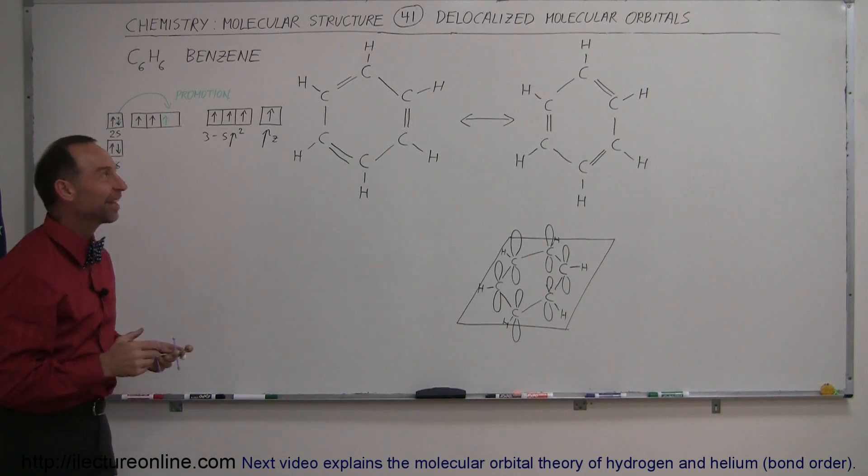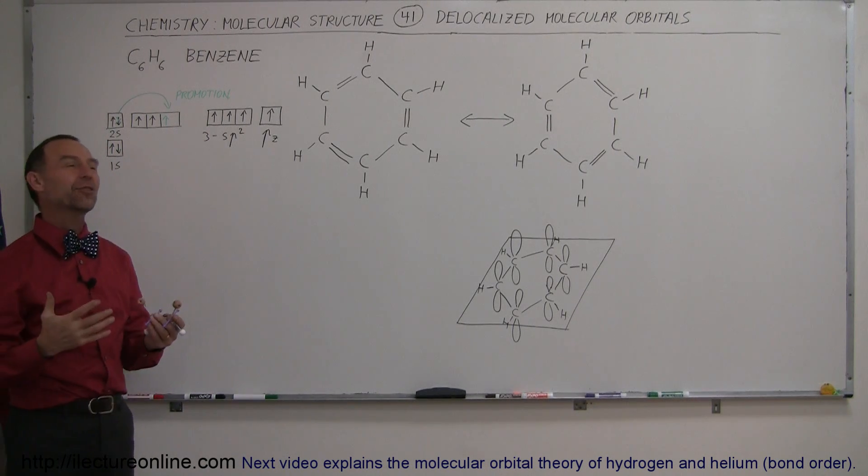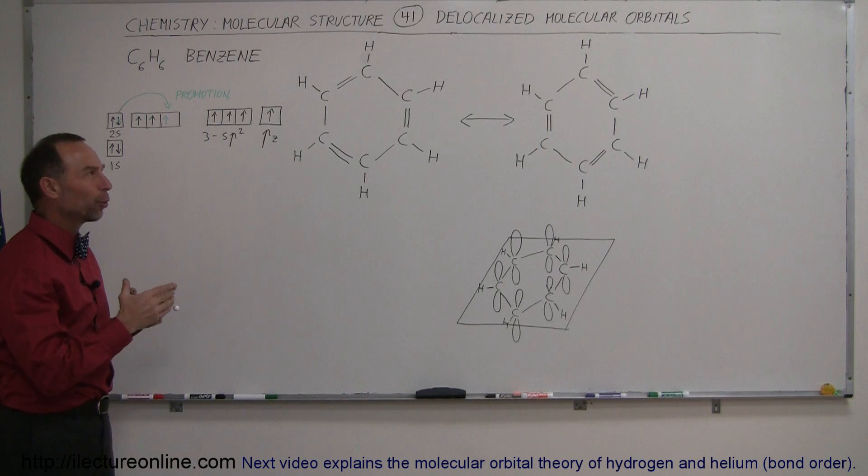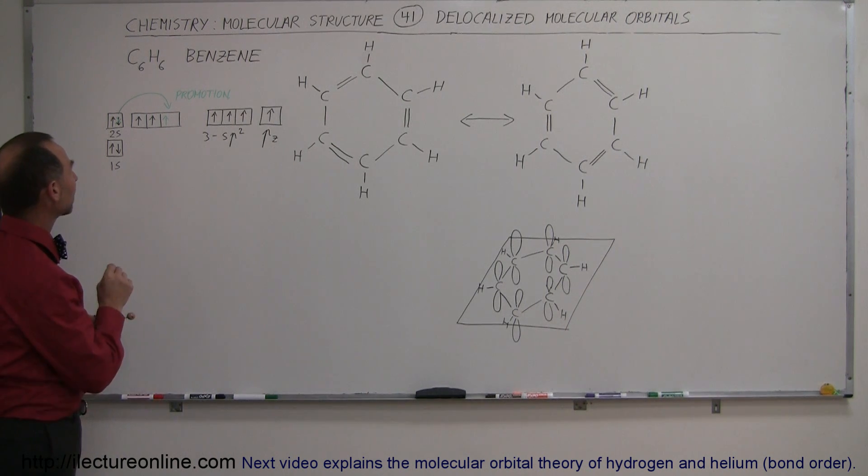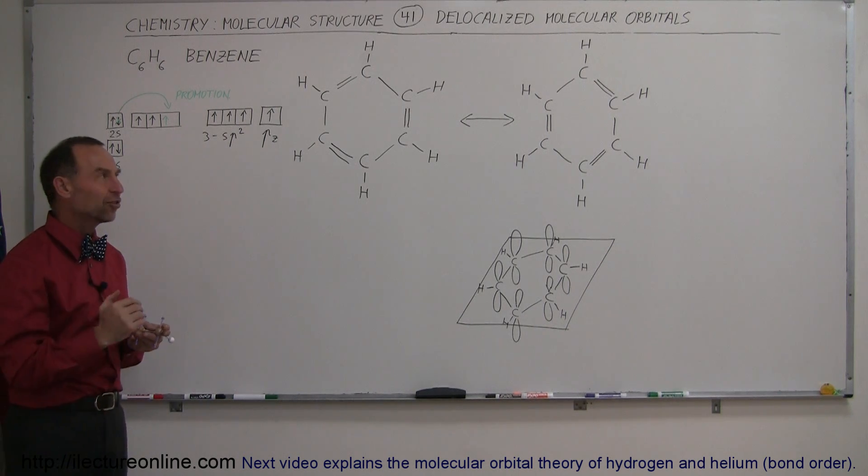Welcome to our lecture online. Let's take a look at some unique combination of hybridization of orbitals and pi bonding. In this particular case, we're going to look at the benzene molecule C6H6.